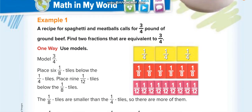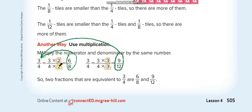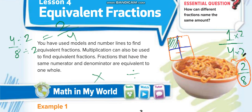Looking at these examples, they created two equivalent fractions for three over four. The first one was made by multiplying by two: three times two and four times two. The second one by multiplying by three. You can try by four, five, six — any number — and you will get an equivalent fraction. The most important thing is that you multiply the same number on top and on the bottom. You cannot multiply by two on top and by three on the bottom.